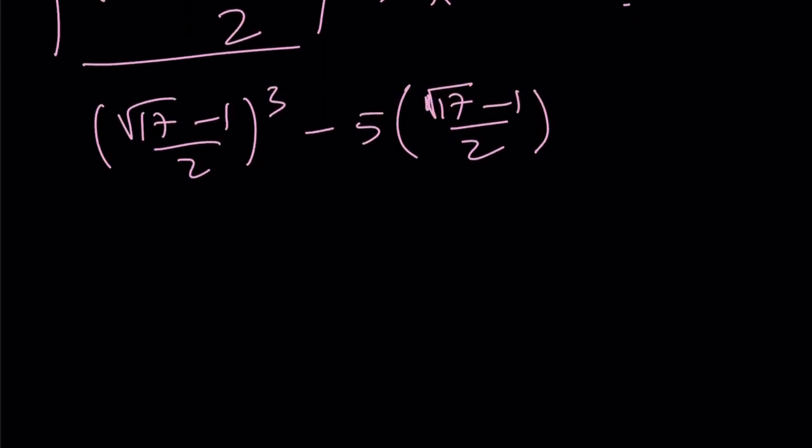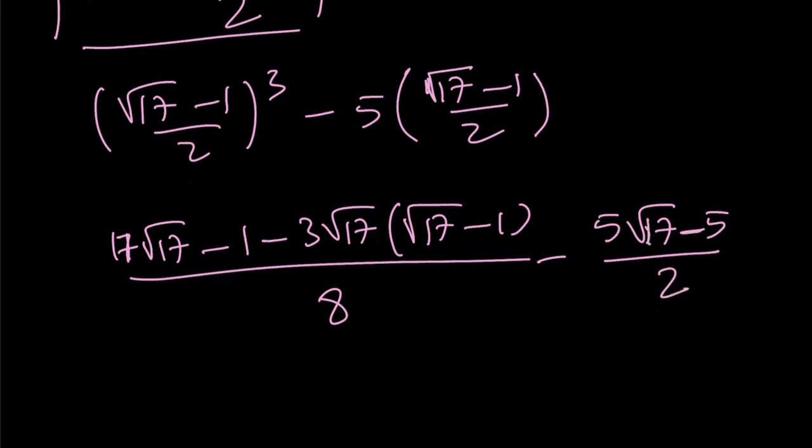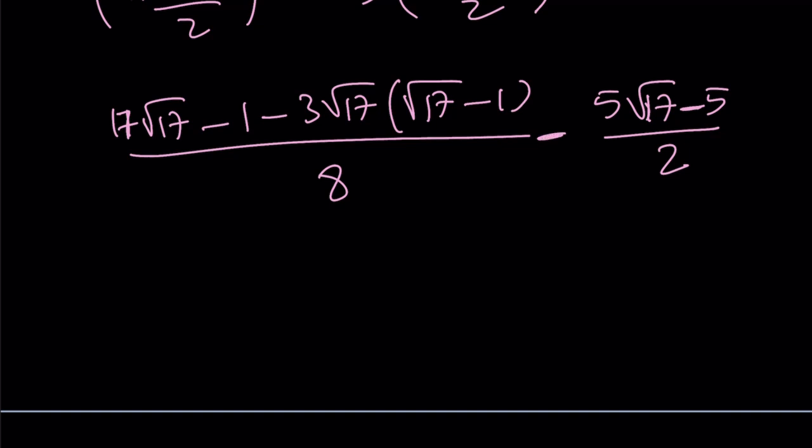To cube it, I'm going to use a minus b quantity cubed, which is a cubed minus b cubed minus 3ab times a minus b. That's an identity that I use, divided by 8. And this is just going to be minus 5 root 17 minus 5. We can multiply by 4 over 4 to make a common denominator. What does this give us? That's 17 root 17 minus 1 minus 3 times 17, which is 51, and then plus 3 root 17.